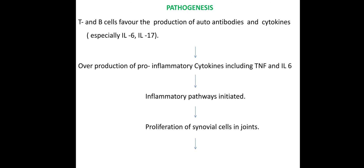Pathogenesis: our immune system produces auto-antibodies against our own body cells. T cells and B cells produce auto-antibodies, and that triggers cytokines including IL-6, IL-17, and interleukin proteins. There is over-production of pro-inflammatory cytokines including TNF (tumor necrosis factor) and interleukin-6, which stimulate inflammatory mediators and pathways.